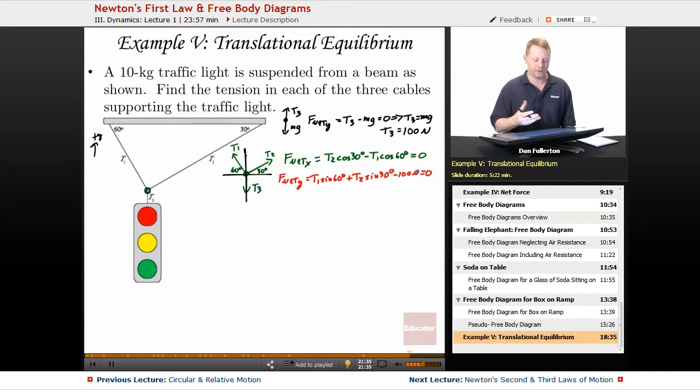So those are the equations I have to solve in order to find my tensions. So let's take a look here. I'm going to go back to my green one, my net force in the x direction, because it looks like with just a little bit of math I can find T1 in terms of T2. So if T2 cos 30 minus T1 cos 60 equals zero,